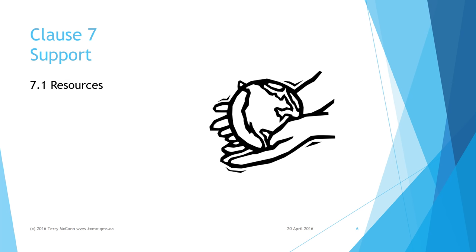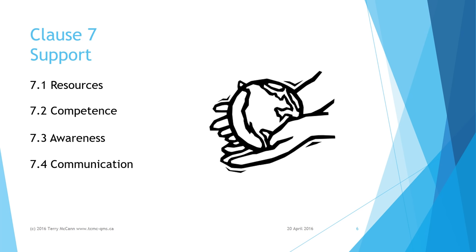Clause 7 describes the requirement to determine the resources needed for an effective and continually improving EMS. In particular, you have to ensure that people are not only trained but competent with regard to the organization's environmental aspects. They must be aware not only of EMS responsibilities but also the implications of non-compliance with regulations and not conforming with EMS requirements. The requirement for processes establishing and controlling EMS-related communications is laid out in some detail, covering the need to know what, how, when, and with whom — both within and beyond the organization.